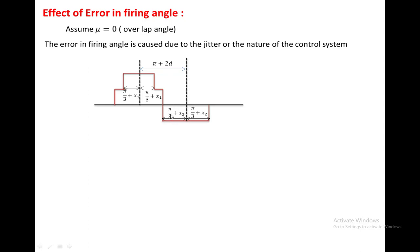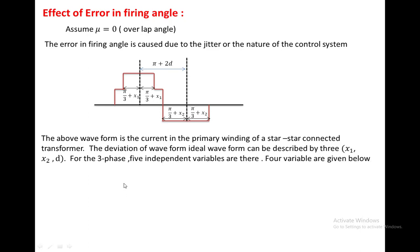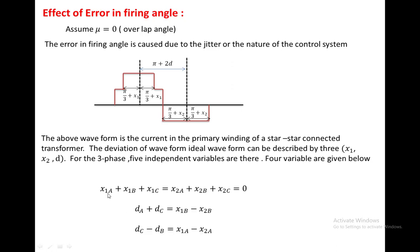Again, this distance is pi/3 plus x2. The three independent variables are x1, x2, and d. By means of these three independent variables we can compare the existing waveform with the ideal waveform. In the case of three-phase analysis, five independent variables appear. Out of these five variables, four are defined by: x1a plus x1b plus x1c equal to 0, and x2a plus x2b plus x2c equal to 0. Here x1 is the variable, and a, b, c represent phases A, B, and C respectively. dA is the distance in the phase A waveform.